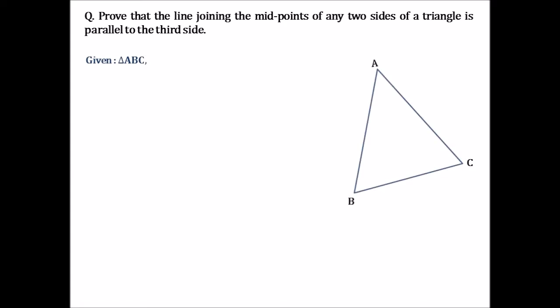We are considering D to be the midpoint of side AB, so we will have AD equals to DB, and E to be the midpoint of AC, so we will have AE equals to EC. We need to prove that the line joining these two midpoints, that is line DE, is parallel to the third side, that is side BC.